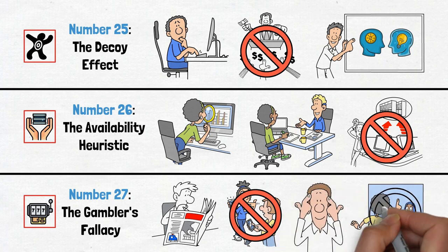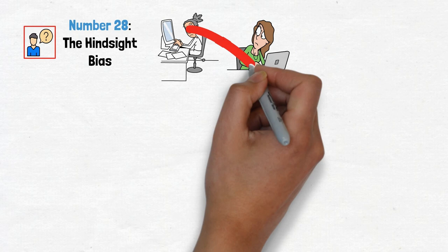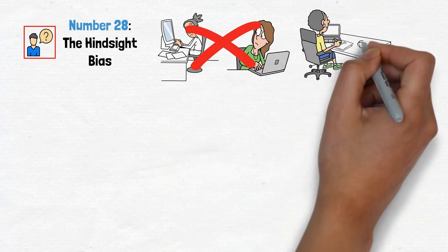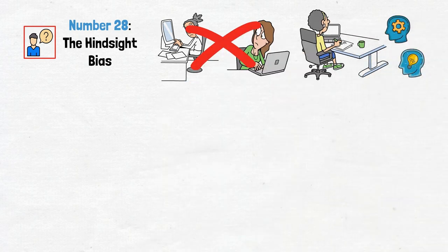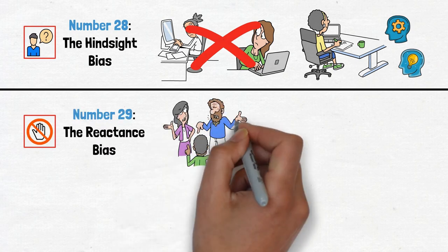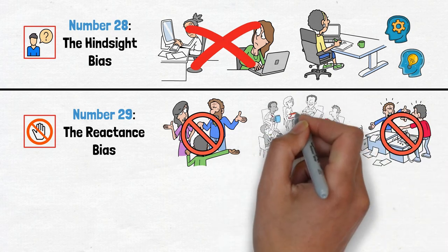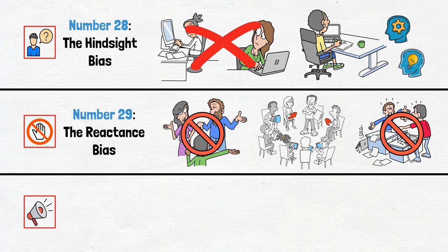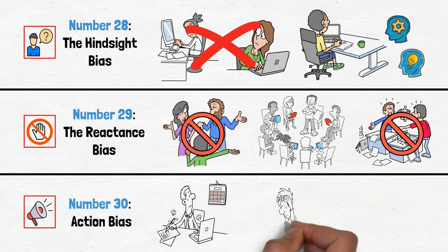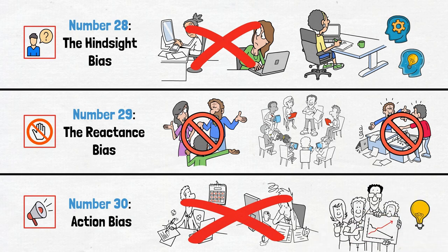Number 28, the hindsight bias. Don't let hindsight distort your perception. Stay grounded in reality and learn from your experiences. Number 29, the reactance bias. Sometimes rebellion isn't the answer. Consider the benefits of compliance and choose your battles wisely. Number 30, action bias. Patience is a virtue, especially in uncertain times. Don't feel pressured to act when inaction is the wiser choice.